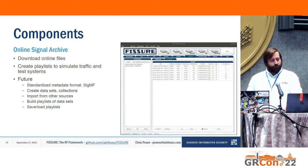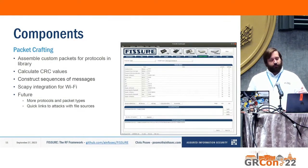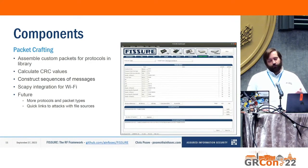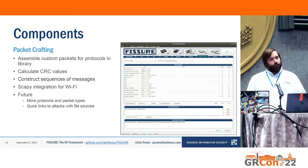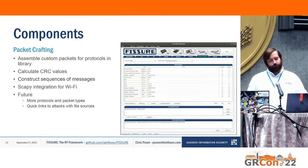There's a packet crafter for crafting things in your library. You can go in, change values, calculate CRCs, and save them to file. You can construct sequences of messages and save them to a file. There's Scapy integration for WiFi — so if you're already in monitor mode, you can just select the WiFi message, view all the fields, click load, and start Scapy transmitting. In the future, more protocols and packet types, and maybe some links right to the attacks from here.